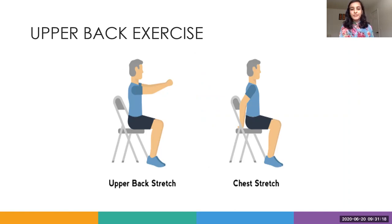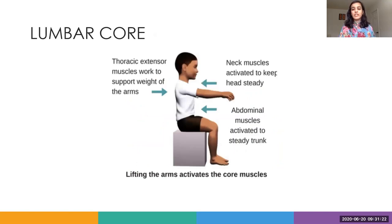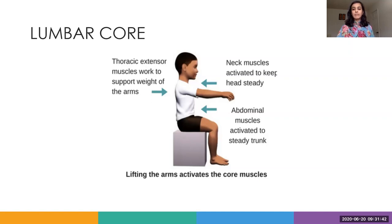Moving on to the lumbar core exercise — a great way to activate your core muscles while sitting and working. Just draw your belly button in and hold it for a couple of seconds. Begin with maybe five seconds, then slowly release. Let's do it together: sit straight, sit tall, slowly draw your belly button in. Hold — one, two, three, four, five. Relax. Again, hold — one, two, three, four, five. Depending on where you begin, you can slowly advance. The key cue is drawing your belly button in and sustaining that posture.